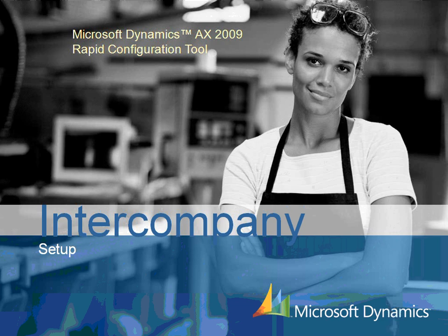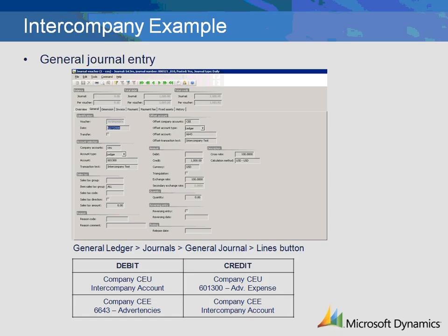Intercompany transactions are used to process transactions between companies. This demonstration will review the setup required in each company in Microsoft Dynamics AX 2009. Here is a general journal entry to demonstrate how an intercompany transaction works. Company CEU is going to transfer an advertising expense to Company CEE.